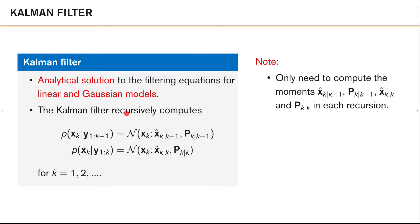It does this recursively — that is, at each time step k, it computes first the predicted density: the distribution of x_k given all the measurements up to k-1. It computes this as a Gaussian density, calculating the mean, which we call x-hat k given k-1, and the covariance, which we call P_k given k-1.